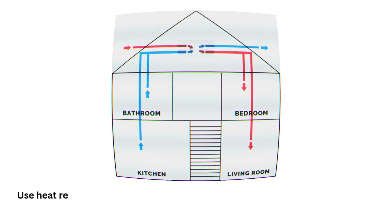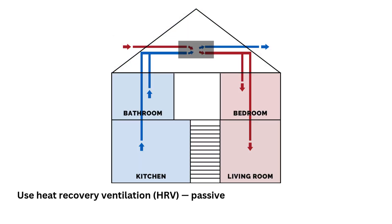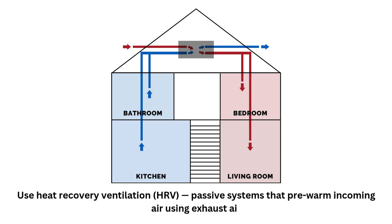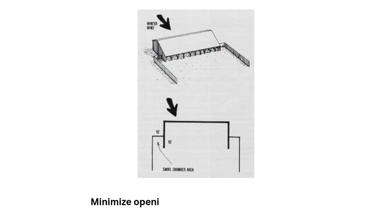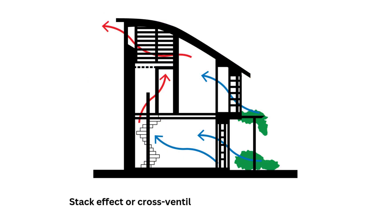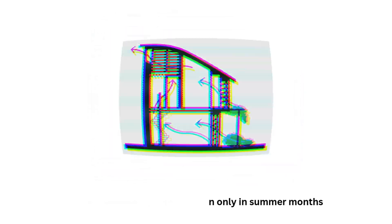Natural ventilation — controlled: the goal is to let in fresh air without losing too much heat. Use heat recovery ventilation (HRV) — passive systems that pre-warm incoming air using exhaust air. Minimize openings on the windward cold side. Stack effect or cross ventilation should only be used in summer months.